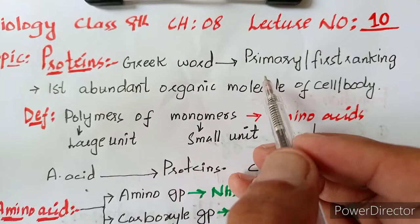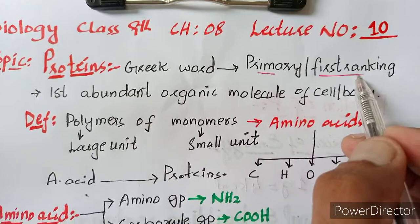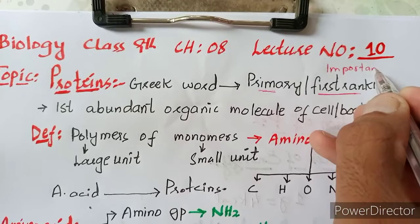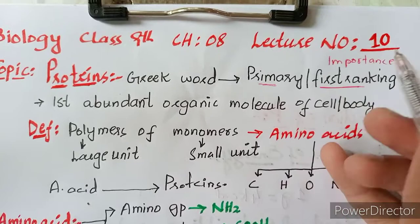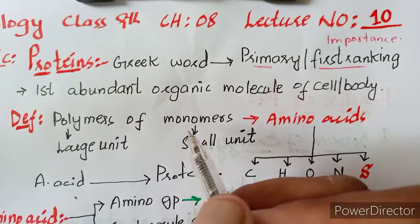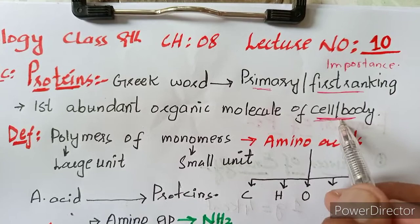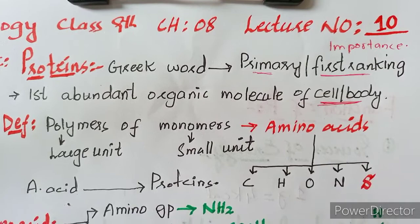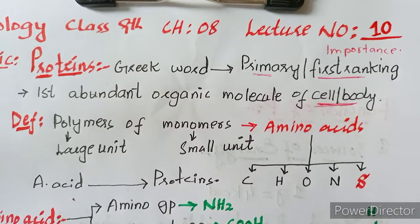The Greek word means 'primary' or 'first ranking' — of first importance. So proteins, from the Greek word, are of first importance. Proteins are the most abundant organic molecules of the cell or body.